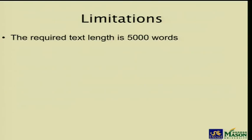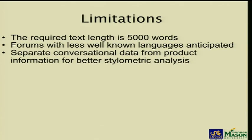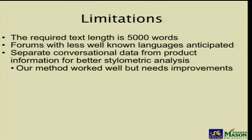In our experiments we had general limitations. We need at least 5,000 words, and we used the gold standard of 6,500 words. Even though we started with tens of thousands of users in the forums, after eliminating users with less than 6,500 words, we were left with only hundreds of users. We are also anticipating forums with less well-known languages in the future, which will cause more problems in language identification and translation. We need to better separate conversational data from product information, and our current product detection method needs improvement to detect all different kinds of products in these forums.